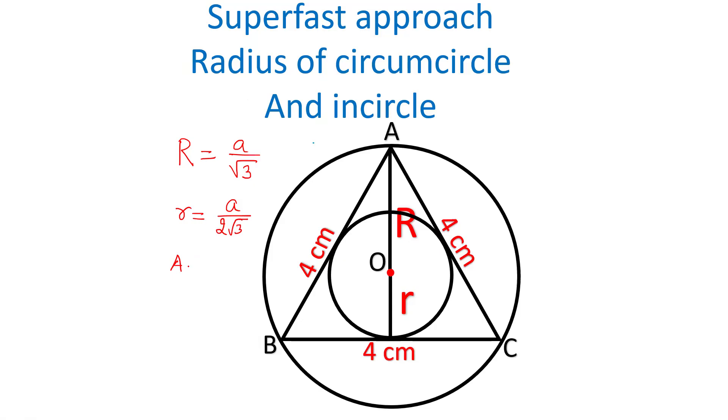Area will be equal to, area of circumcircle will be equal to pi a upon 2 by 3. And area of incircle—this is area of circumcircle.